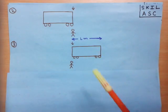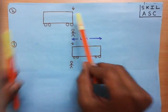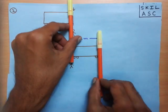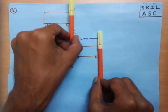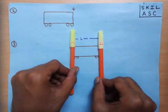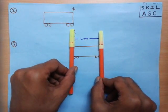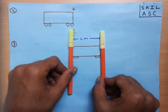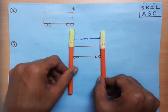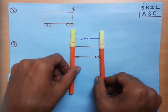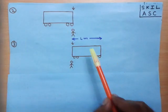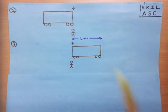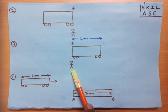To measure this distance, consider the front of the train. In the first position the front is here, and in the second position the front is here. The distance between these two front positions is L meters — which is the length of the train. So to pass a man, the train has to travel a distance equal to its own length, which is L meters.